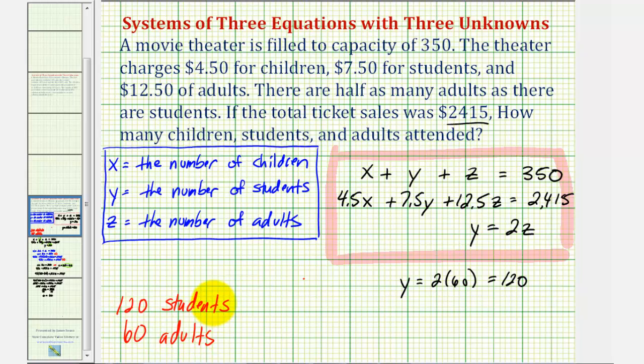Notice there are half as many adults as there are students, as it says here. Finally, to find x, the number of children, we know that x plus y plus z equals 350. So x plus 120 plus 60 equals 350, or x plus 180 equals 350. Subtracting 180 from both sides, we have x equals 170, which means there are 170 children in the theater.